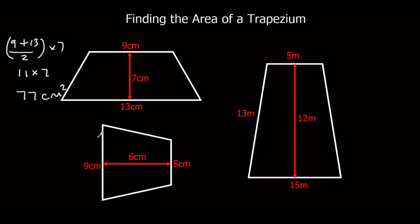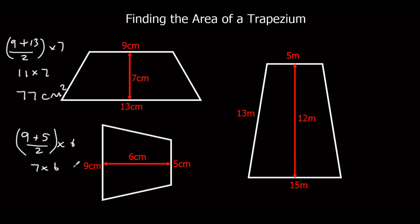Here we've got nine plus five over two, times six. Nine plus five is fourteen, half of that is seven. So seven times six is forty-two centimetres squared.